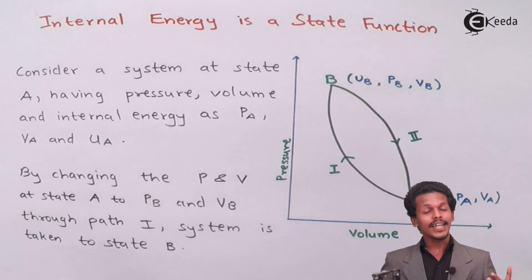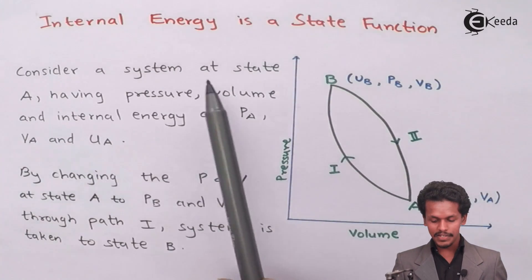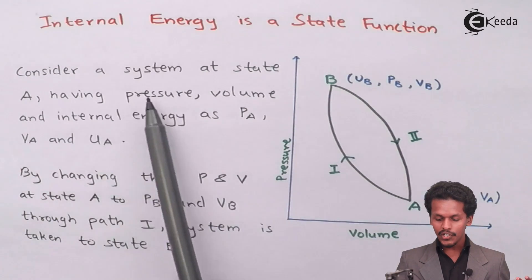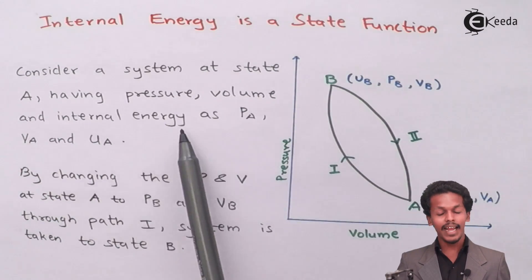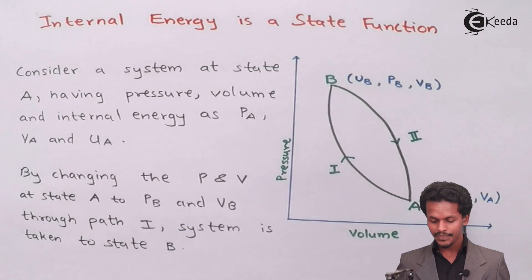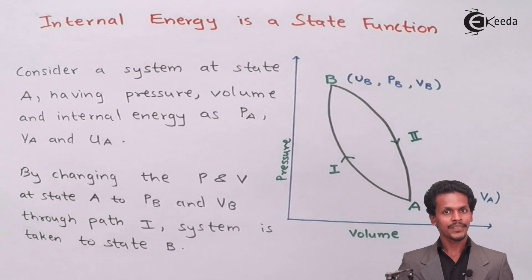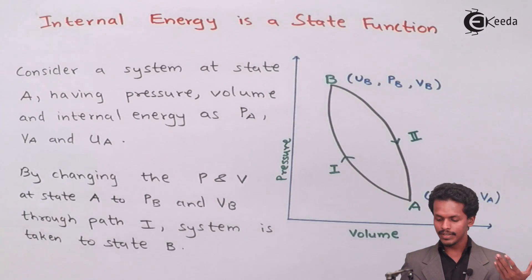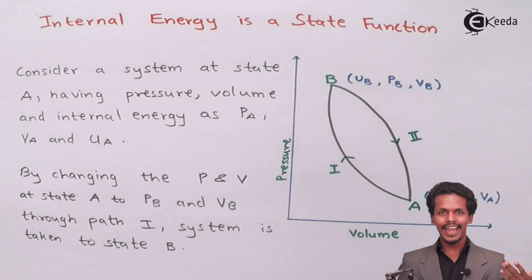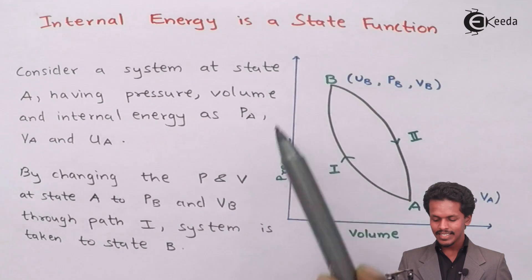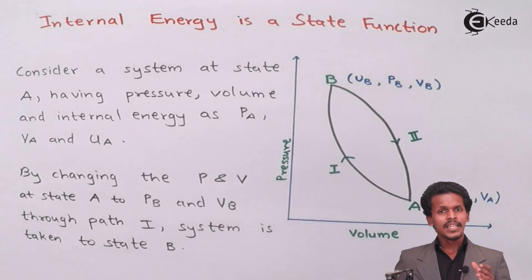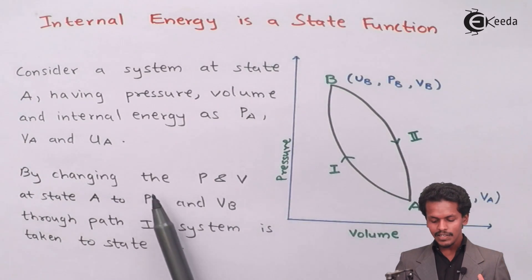For that, we are going to consider a system at State A, having pressure, volume, and internal energy represented as P_A, V_A, and U_A respectively. This is the first state of a particular system with a particular internal energy, pressure, and volume. We also have a pressure-volume graph for this system.